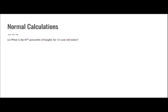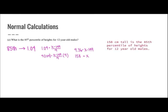What is the 85th percentile of heights for 12-year-old males? Looking in the Z-score table for 85%, the closest Z-score is 1.04. I set 1.04 as my Z-score and solve for the raw score X, getting 158. So 158 centimeters is the 85th percentile of heights for 12-year-old males.